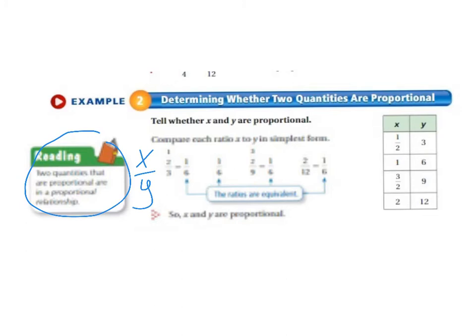We have a situation where we put the x on the top and the y on the bottom. So we're going to do that with each of our sets of numbers over here. So 1 half over 3. And if we simplify that it becomes 1 sixth.